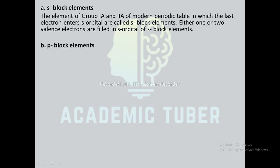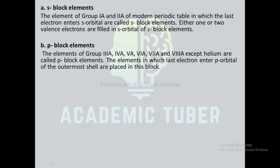P block elements: the elements of group 3A, 4A, 5A, 6A, 7A, and 8A except helium are called p block elements. These are elements in which the last electron enters the p orbital of the outermost shell.